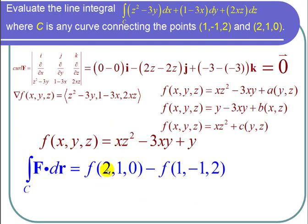So I just have to evaluate. I plug in 2 for x, 1 for y, and 0 for z. And I get 2 times 0 squared is 0 minus 3 times 2 times 1 is minus 6 and then plus 1 is negative 5.